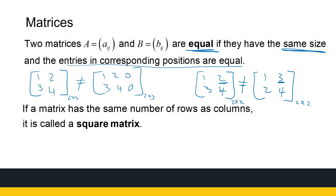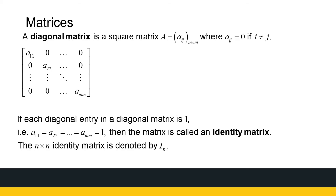The next concept is the square matrix. A lot of our work will be on square matrices. A square matrix is a matrix with the same number of rows and columns.